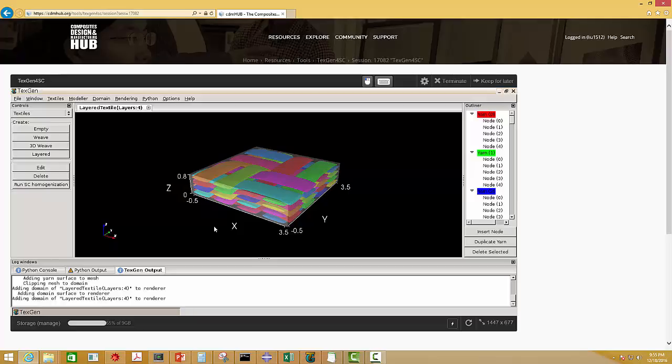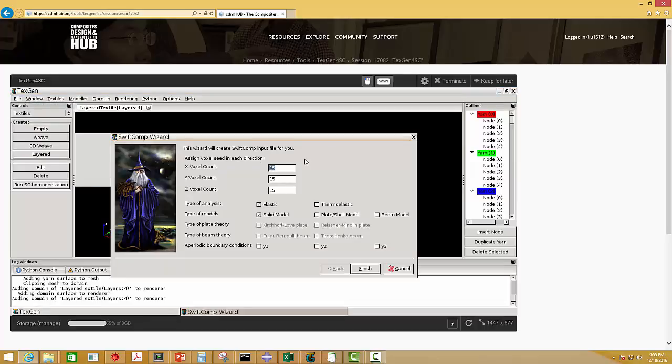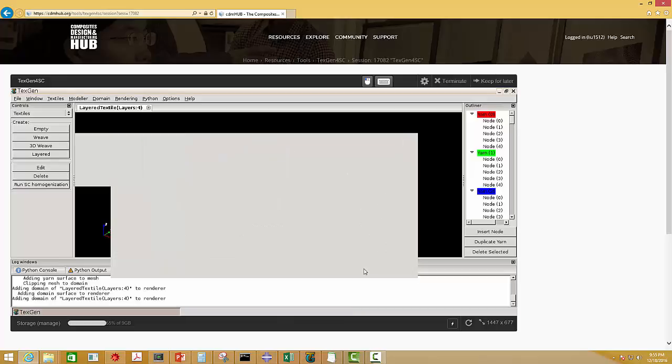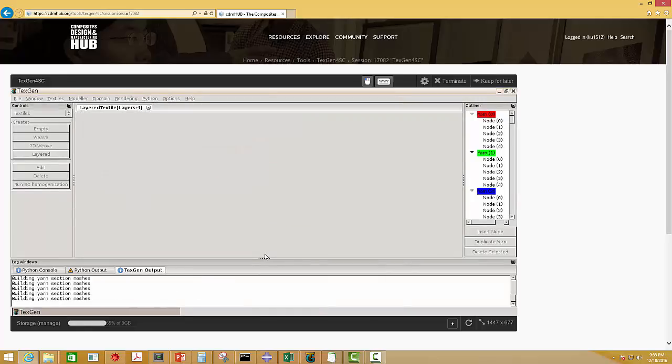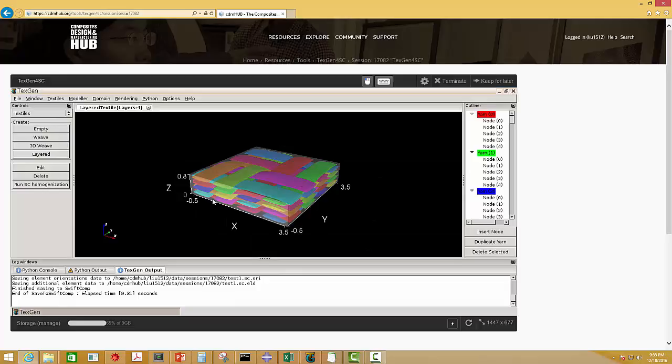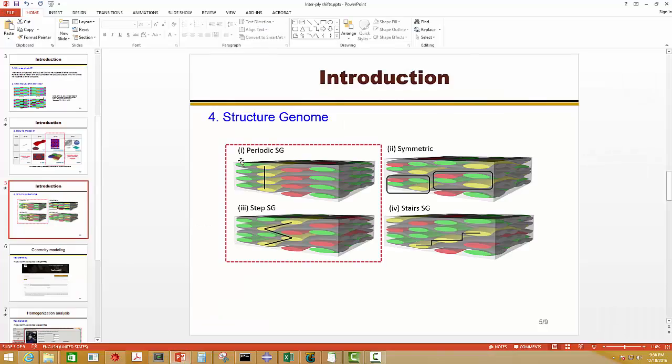So this is my periodic stacking microstructure SG. And based on previous videos, you will know how to modify the material properties and do the homogenization analysis. Here, let's say the model is ready. So I can directly export the SwiftComp file and set the Vox count. Here, I just use a very coarse mesh and click Finish. Give it a name. And once it's done, it will tell you how much time it took to generate this SwiftComp input file. And then go to the Run SC homogenization. Then you have the effective properties of this periodic SG.